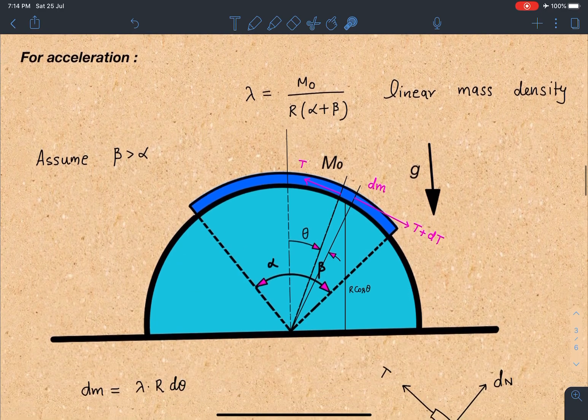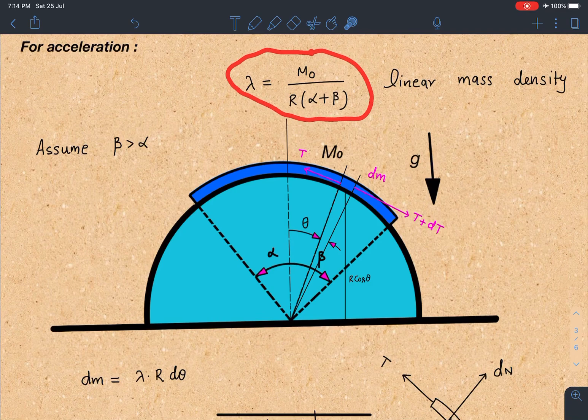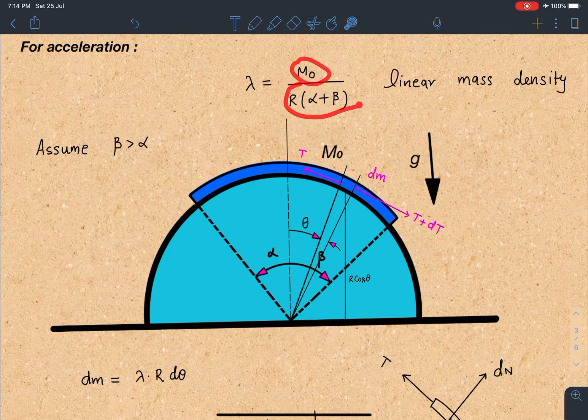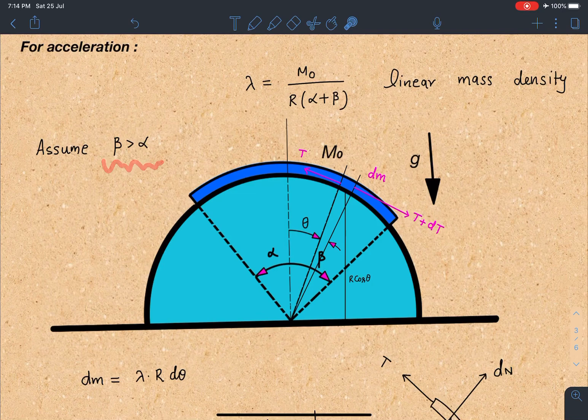So here is the first part for acceleration. For my convenience I am defining this linear mass density of this chain. Since it is uniform, I can write it as total mass divided by total length. Total length is going to be R times alpha plus beta. So hereafter linear mass density I am going to use as lambda and in the final expression I am going to substitute the values. And another assumption which I am taking here is let's assume beta is greater than alpha. This angle is more than this angle I am assuming.